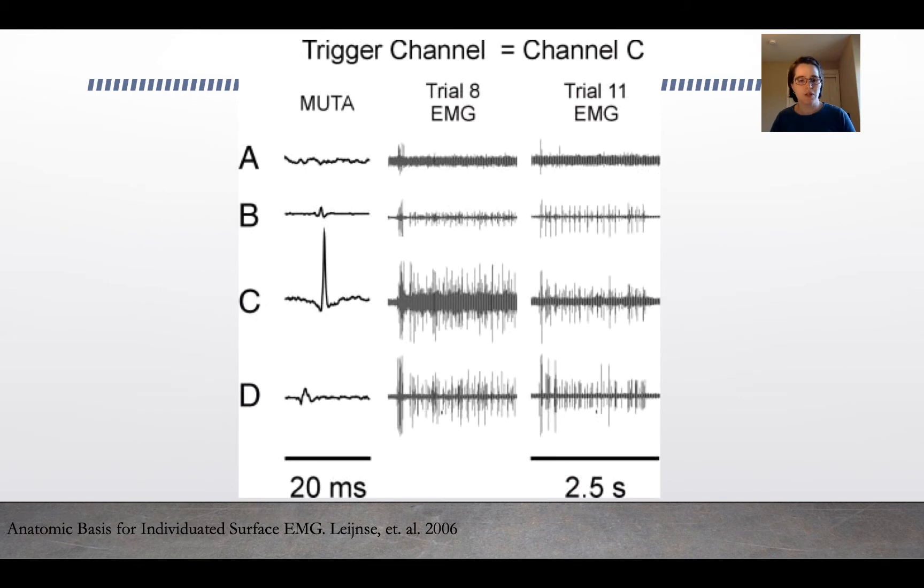There's also a challenge with EMG of crosstalk. If you're using multiple electrodes, sometimes one electrode will pick up the signal being transmitted in another electrode. That's a process called crosstalk where you have talk between the electrode wires. You can see that in this figure here where channel C is affecting several of the other channels, in particular channel B.